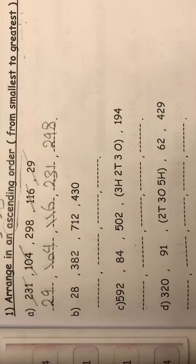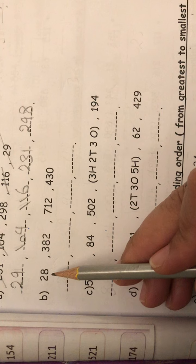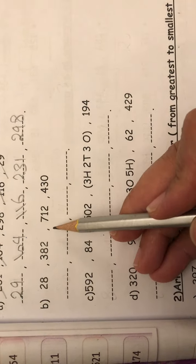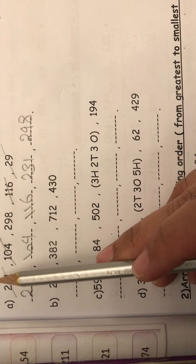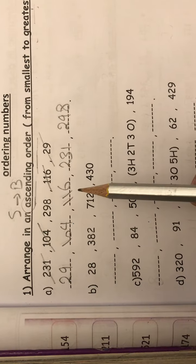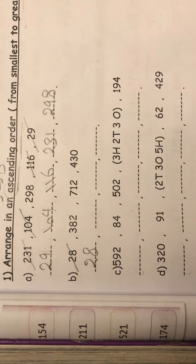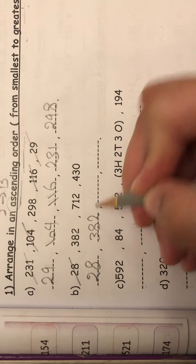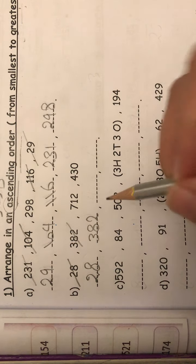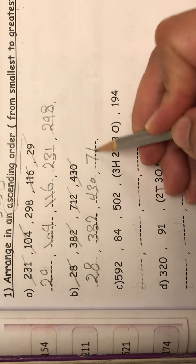Let's see another example. 28, 382, 712, 430. And I am arranging in ascending. So I start with a small number. So 28, after 382, 430, and last, 712.